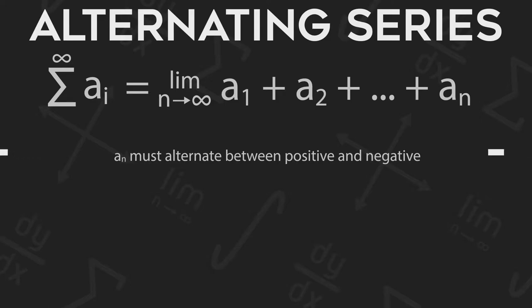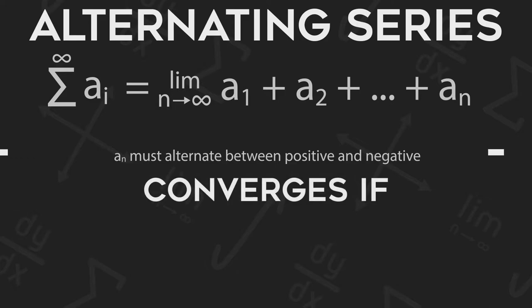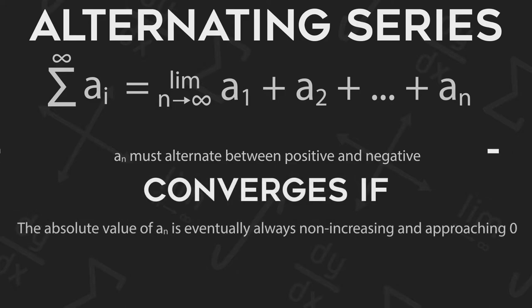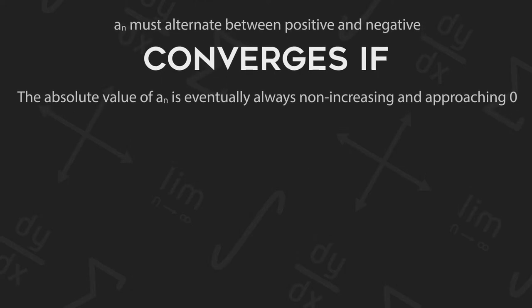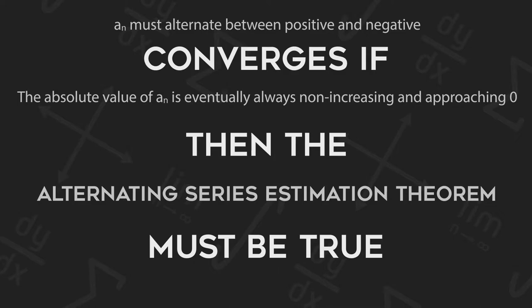And now given that the series is alternating, it will converge if the absolute value of a sub n is eventually always non-increasing and approaching zero. The focus of this video is not about why these conditions prove what they prove, but instead about understanding how we can use them to deduce information about the infinite sum as explained by the Alternating Series Estimation Theorem.